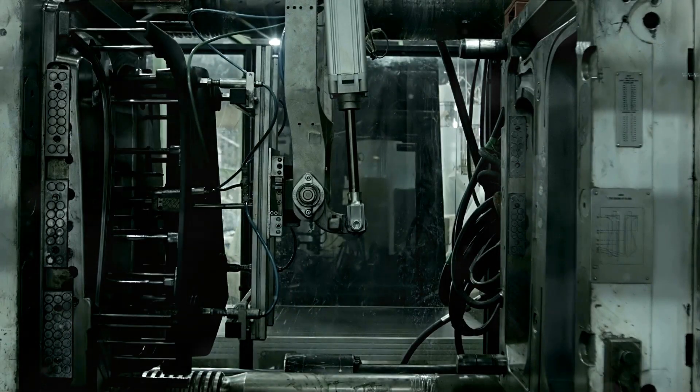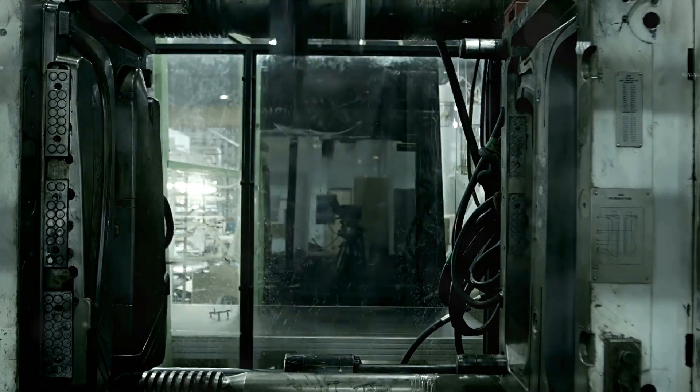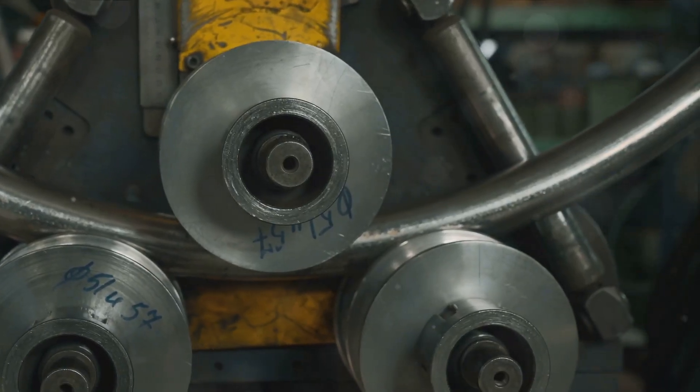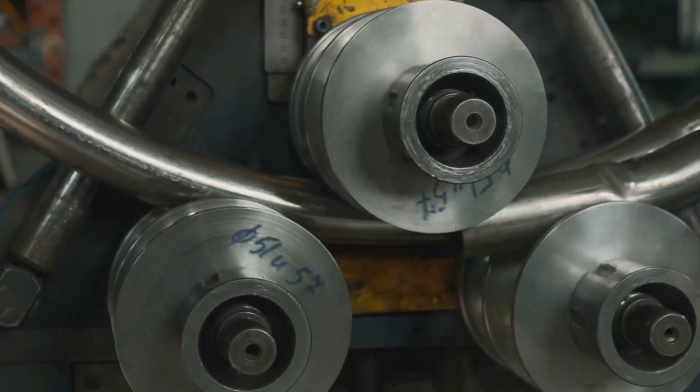First on our list is the power press machine, a marvel of engineering that applies pressure to transform raw material into specific shapes. The power press machine is a workhorse, taking in raw materials and churning out products with precision and consistency. How does it do this? By using dies, which are specialized tools that shape materials.